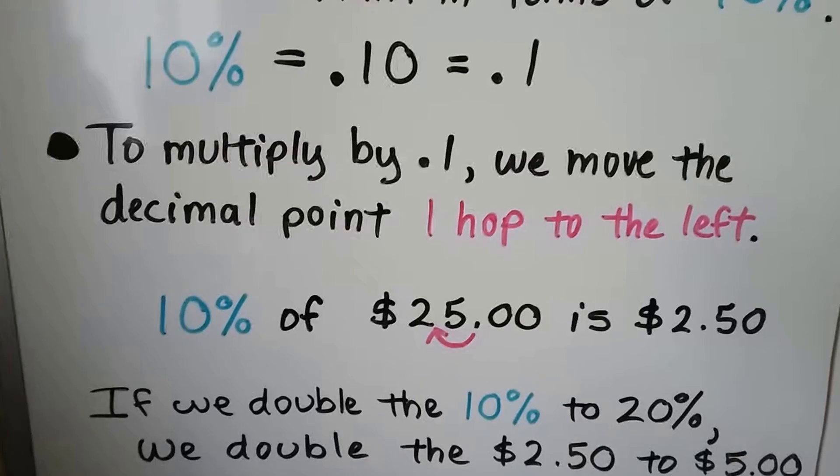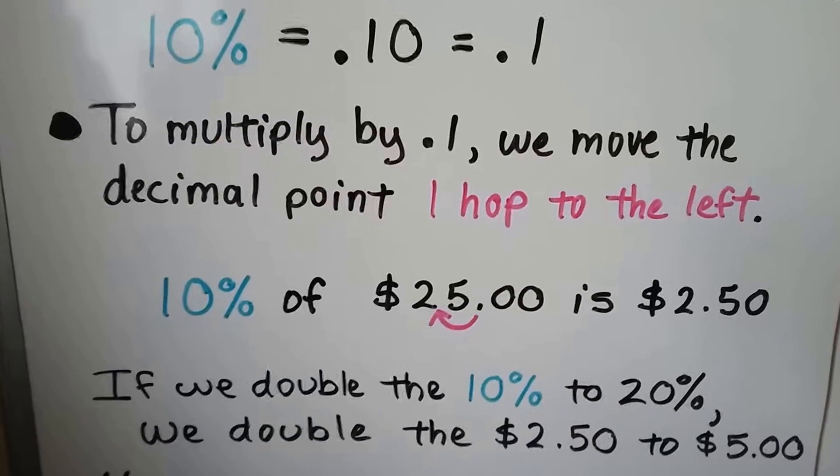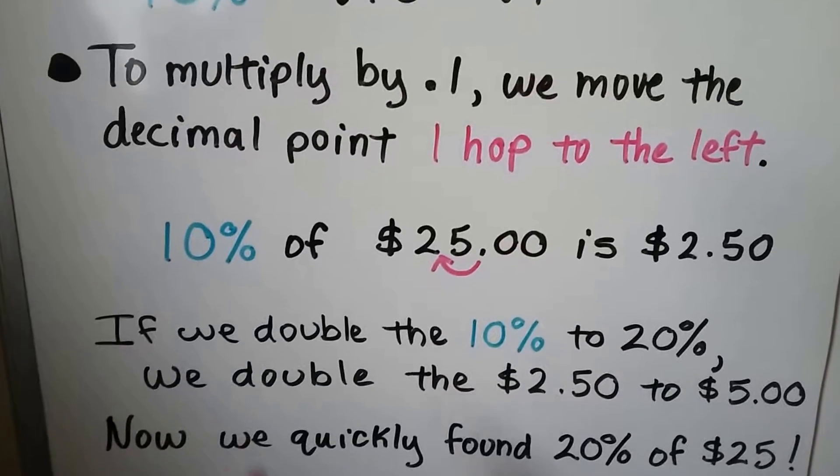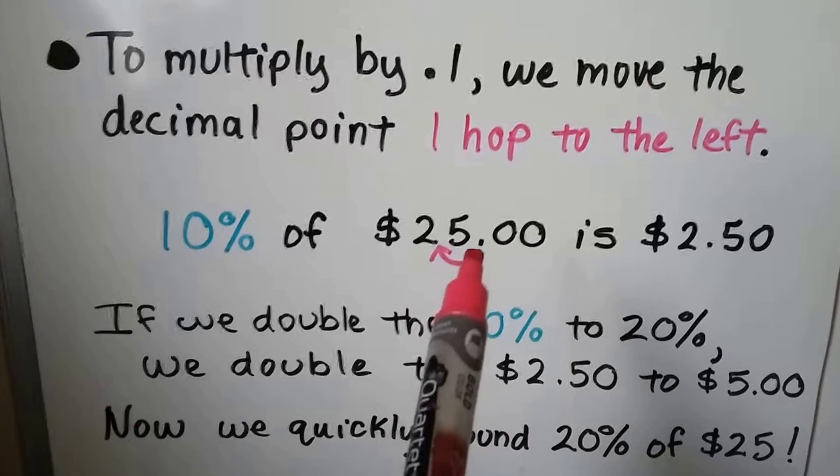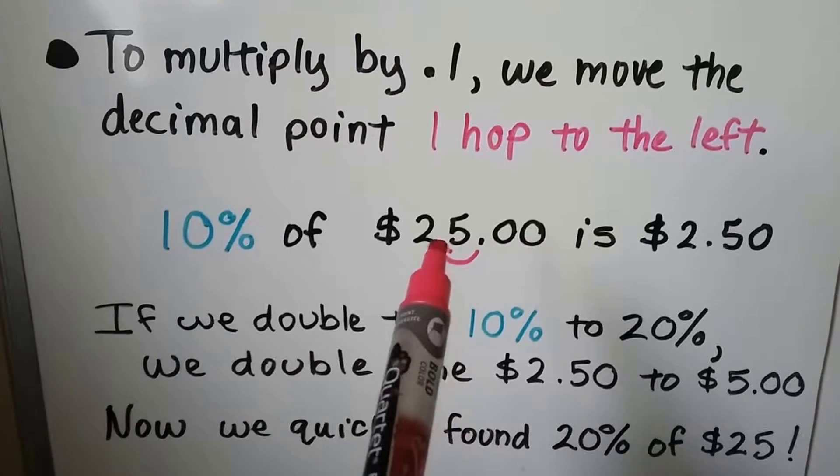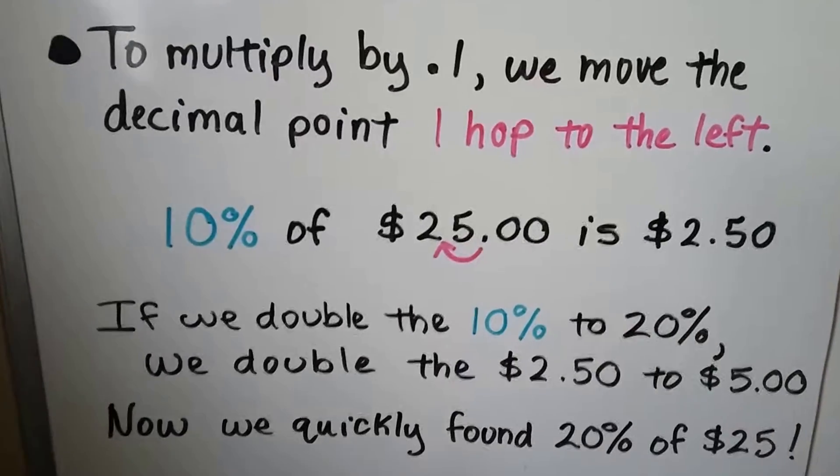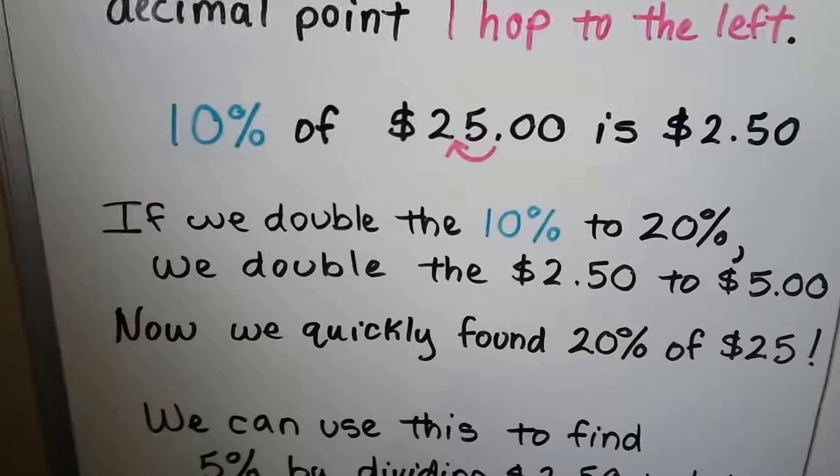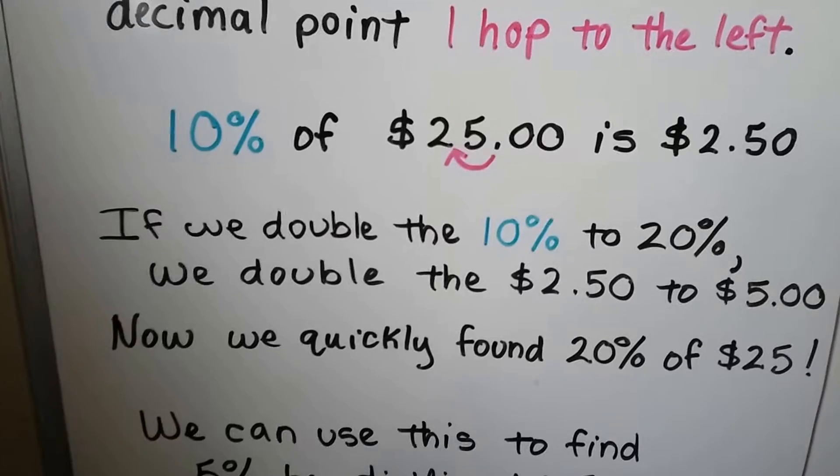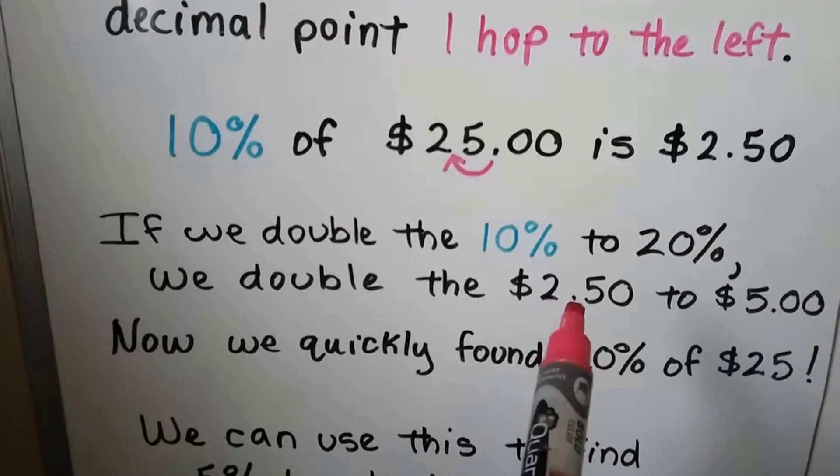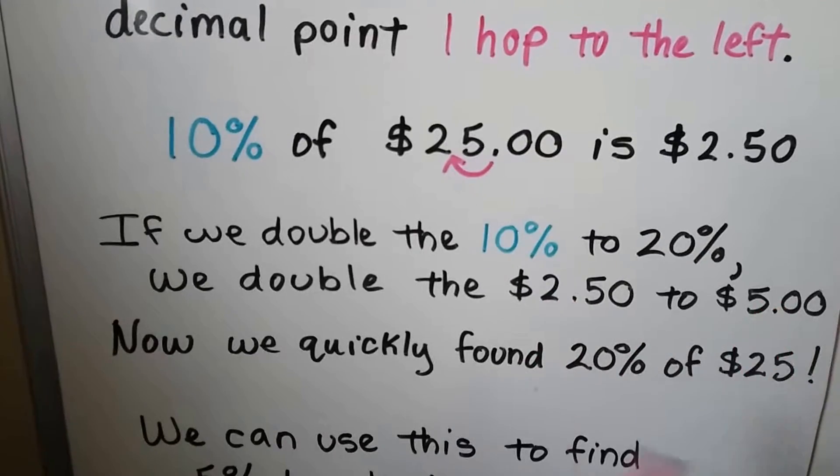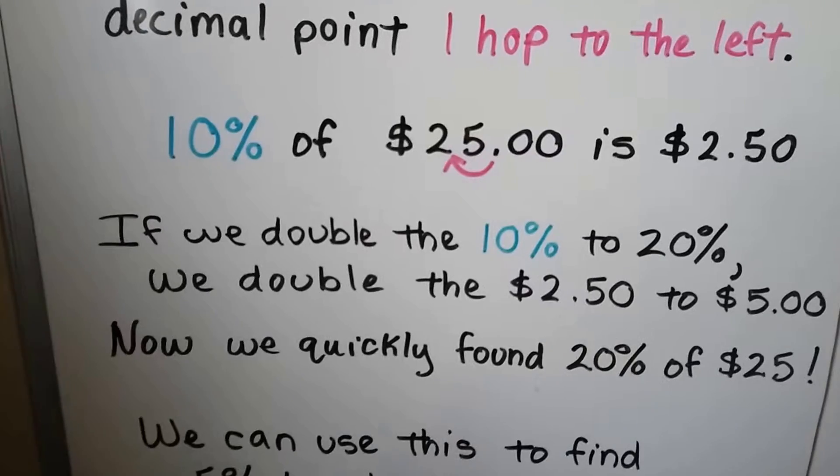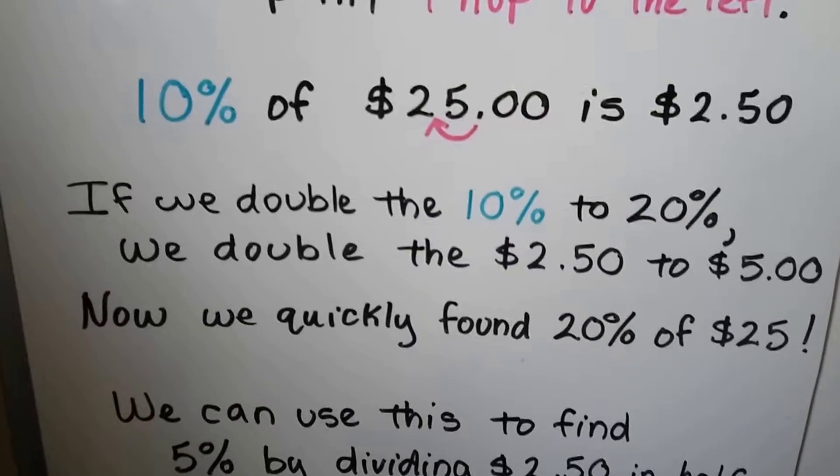To multiply by 0.1, we move the decimal point one hop to the left. So ten percent of twenty-five dollars, we move that decimal place one hop to the left. It's two dollars and fifty cents. We could do that quickly in our head. If we double the ten percent to twenty percent, we can double the two dollars and fifty cents to five dollars. Now we quickly found twenty percent of twenty-five dollars.